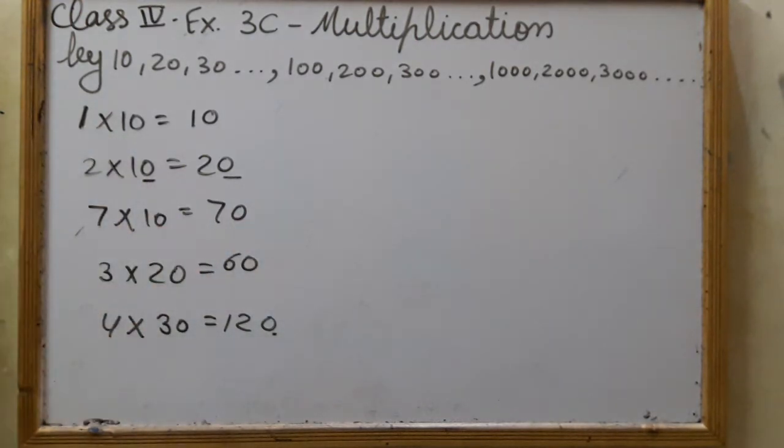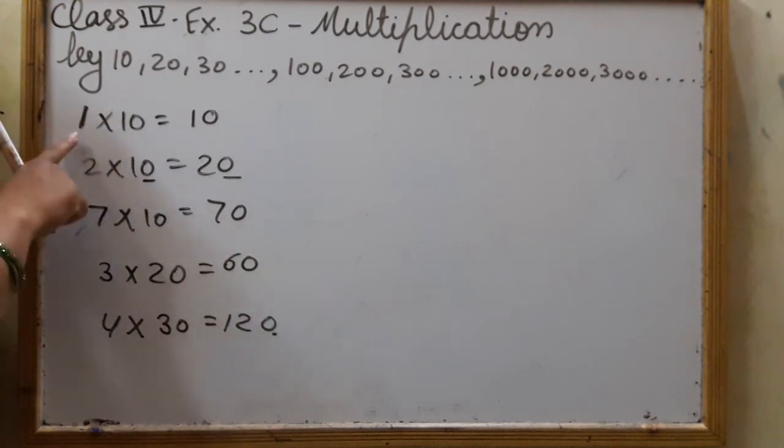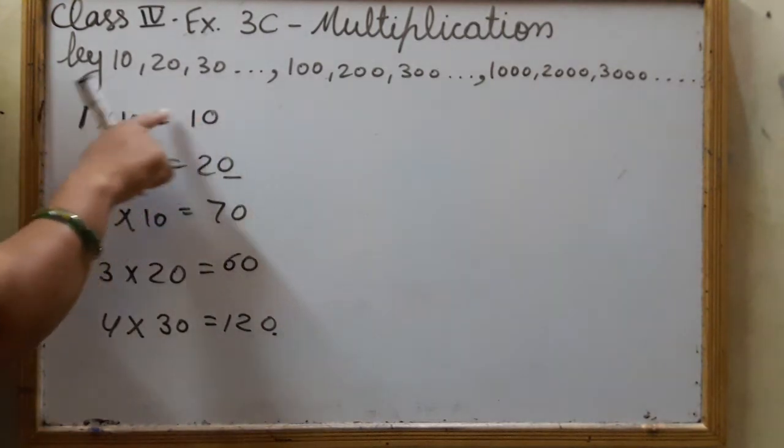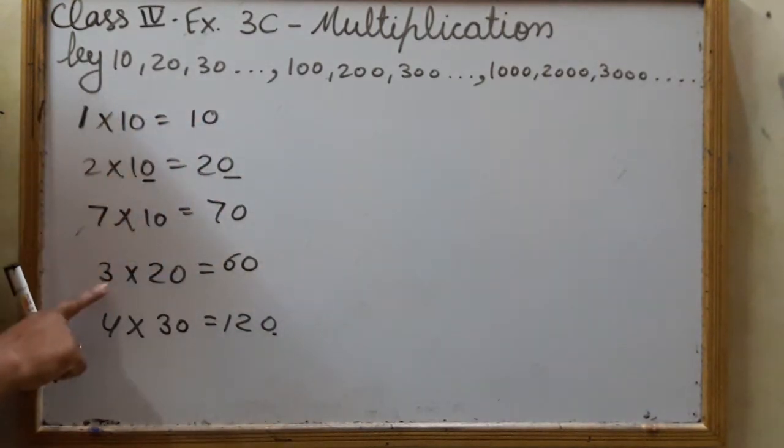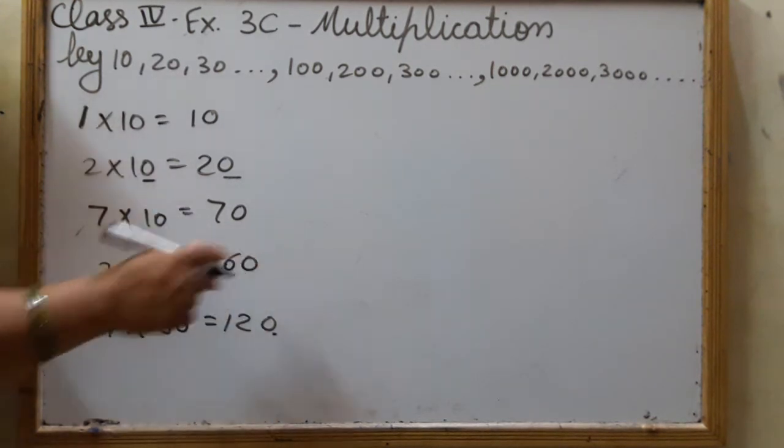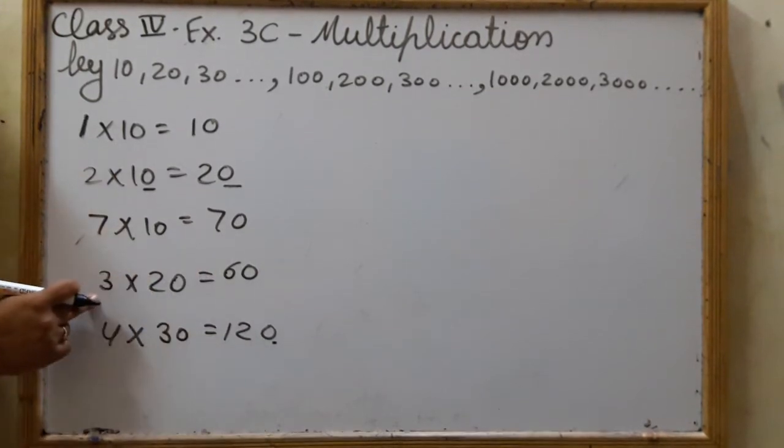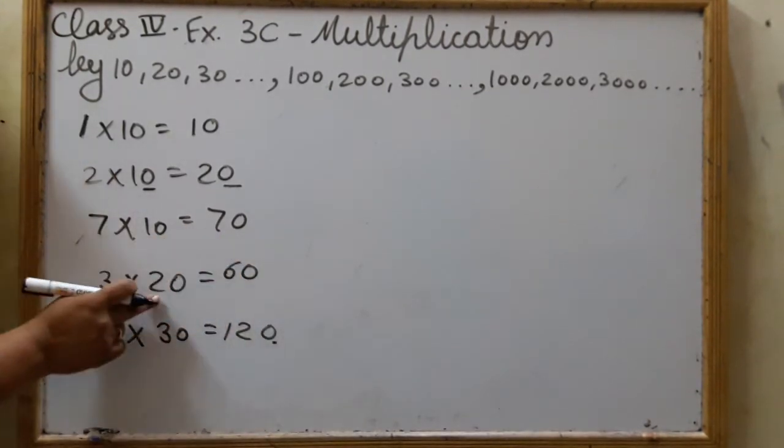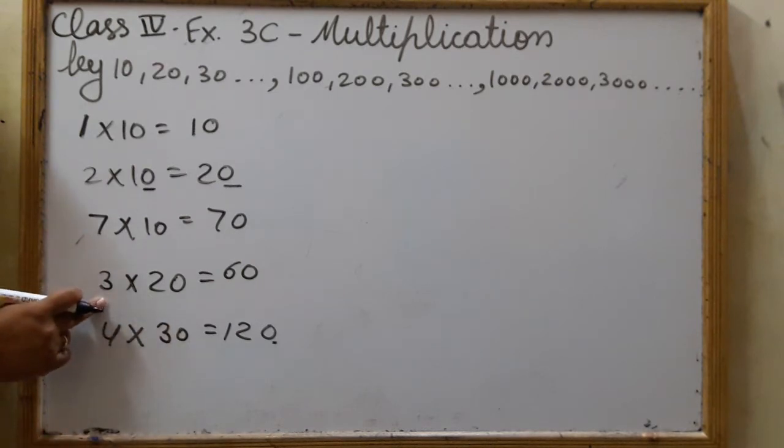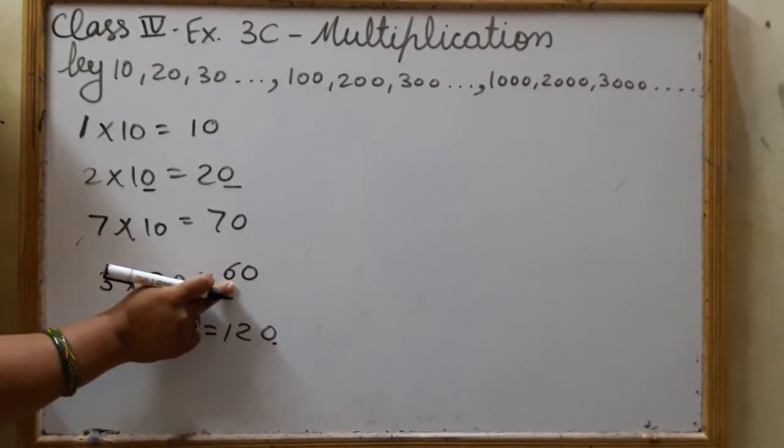So the easy way to multiply by 10 is, whatever number there is, we will write and put 1 zero there. And if we multiply by 20, then what? Zero will be there and the remaining numbers, we will multiply by each other. The zero will be put there and both numbers will be multiplied together and the product will be written here.